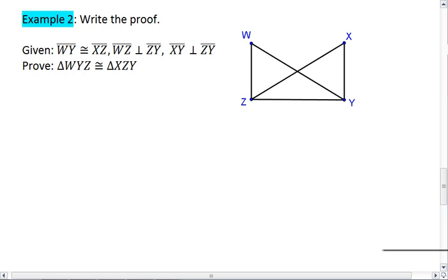All right, the first thing I always want you to do is that if the picture is not always marked, make sure you mark it. I'm given WY congruent to XZ. So I find WY. And that's this whole segment here. So I know that that whole thing is congruent. And that that is congruent to XZ.